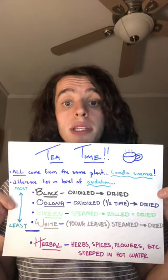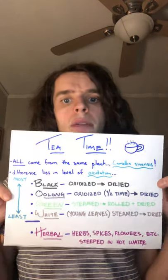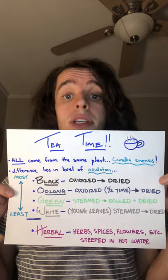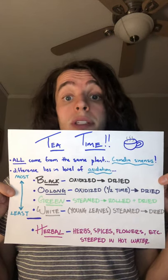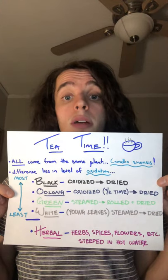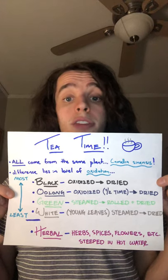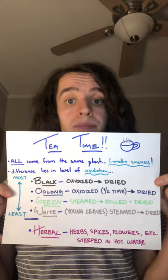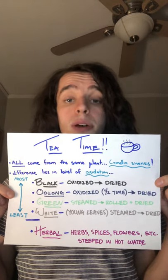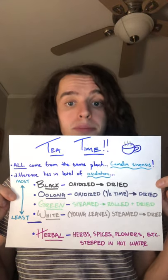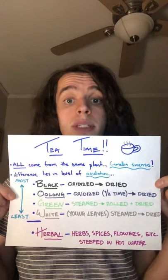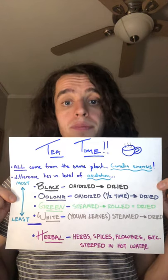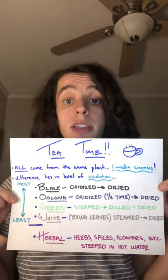Moving on to our green tea, this is where we see a greater divergence. The main difference comes from the fact that our tea leaves are steamed just a few hours after they are harvested, meaning that they experience little to no oxidation. Steaming halts the oxidation process. After they are steamed, they are then rolled and dried, and of course packaged — for example, in tea bags — for us to consume.